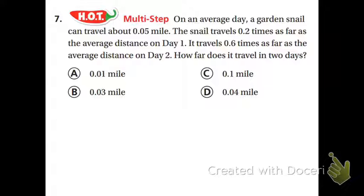So I'm going to use CUBES. I'm going to circle the numbers here. There's a number here. There's a number here. There's a number here. I also have day one and day two. I'm not going to circle those because they're not really meaningful as far as solving the problem goes. They're just saying this happens on day one. This happens on day two. You're not actually using those numbers to multiply or add or anything like that. So I'm going to underline the question. How far does it travel in two days?